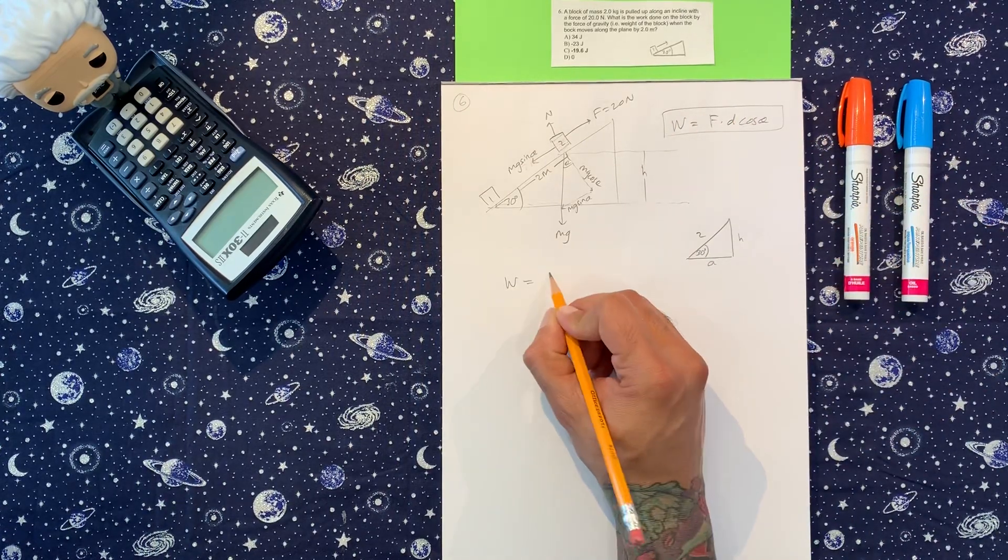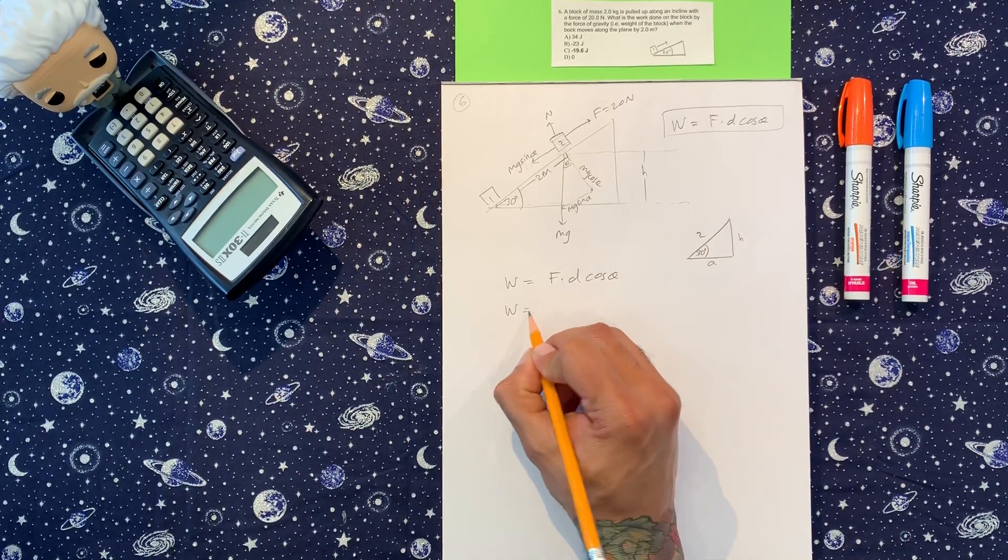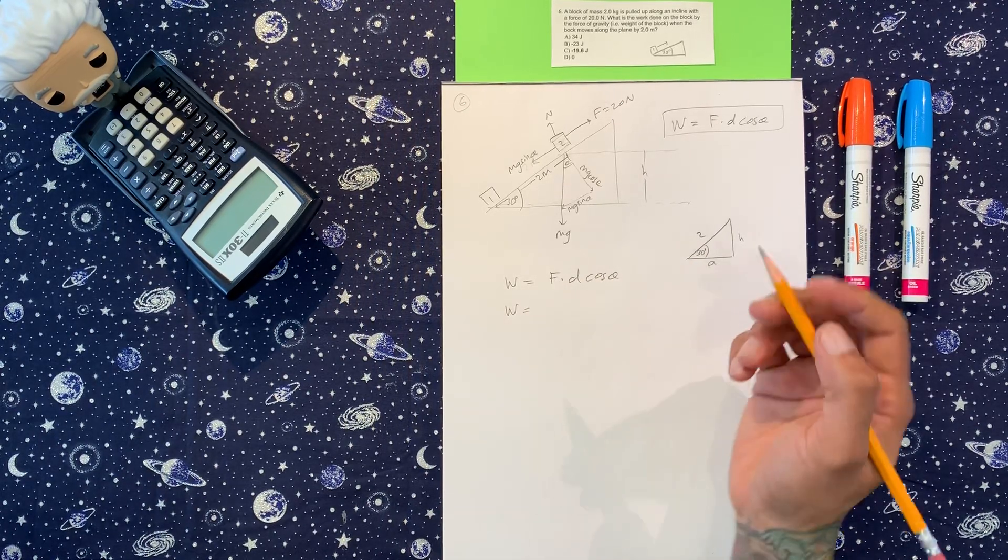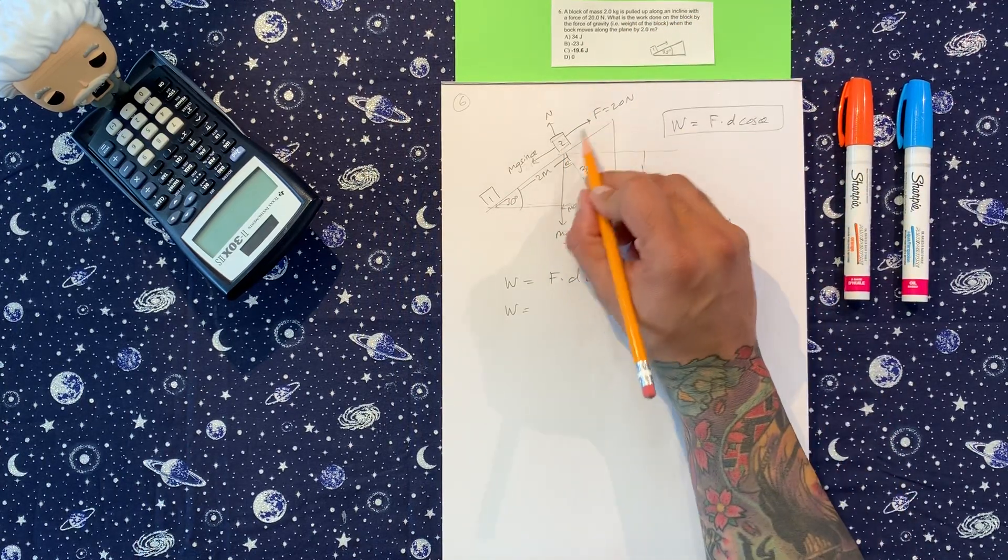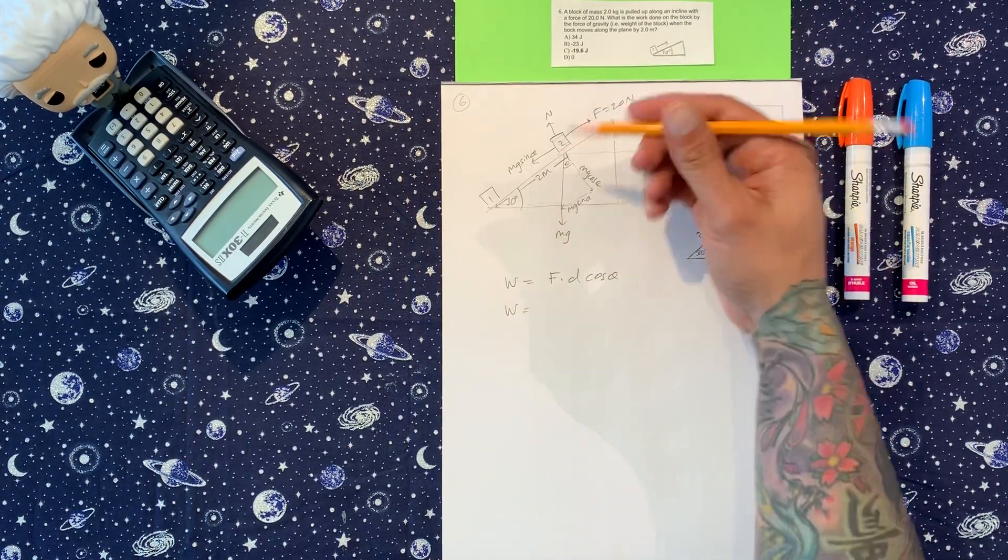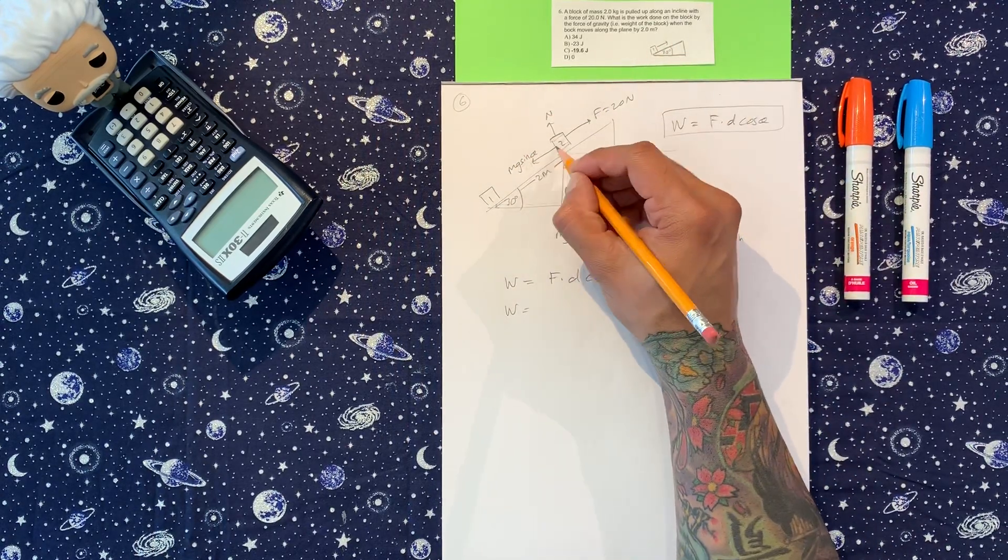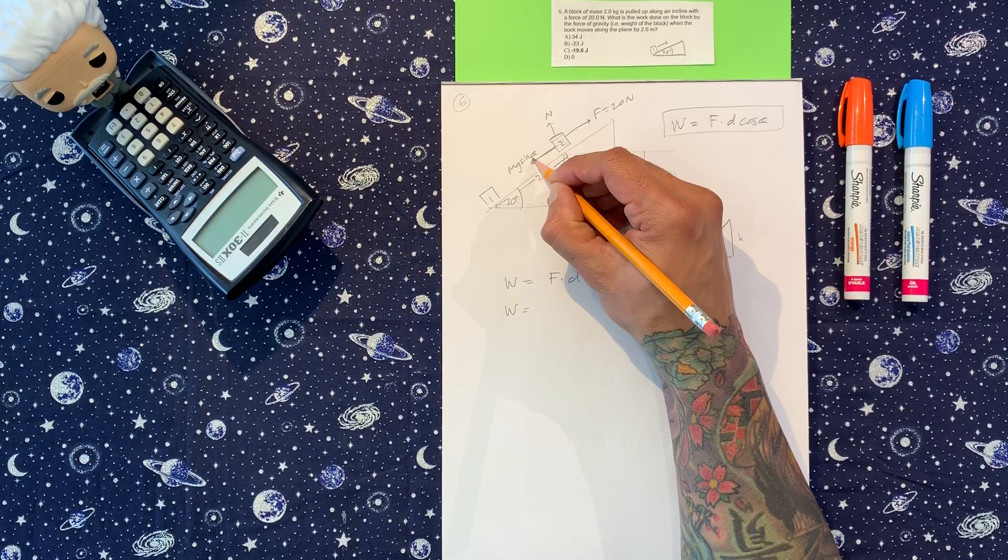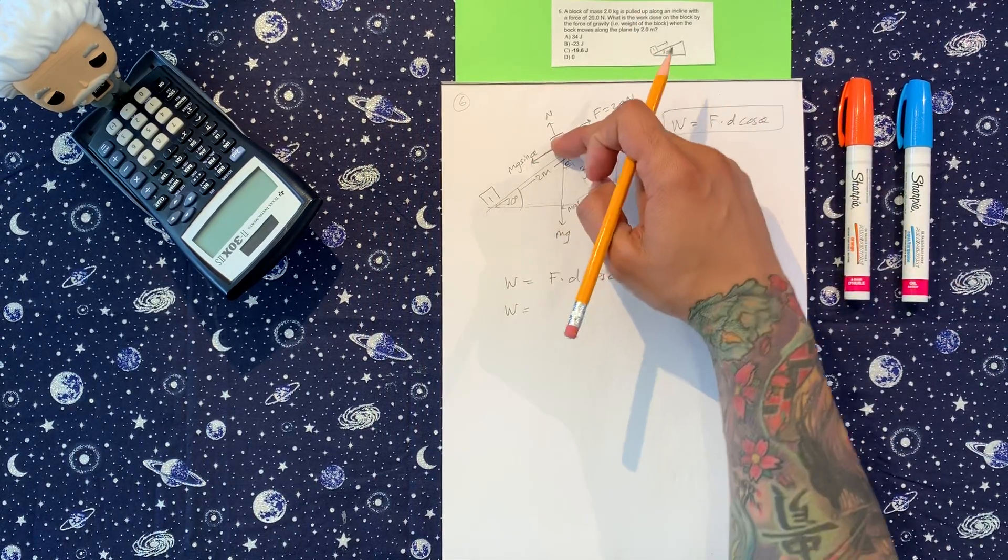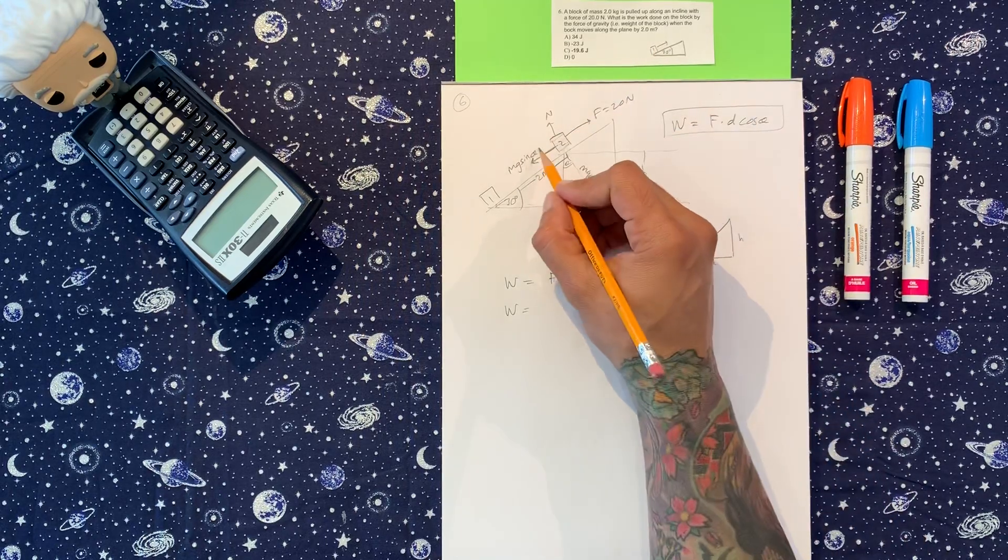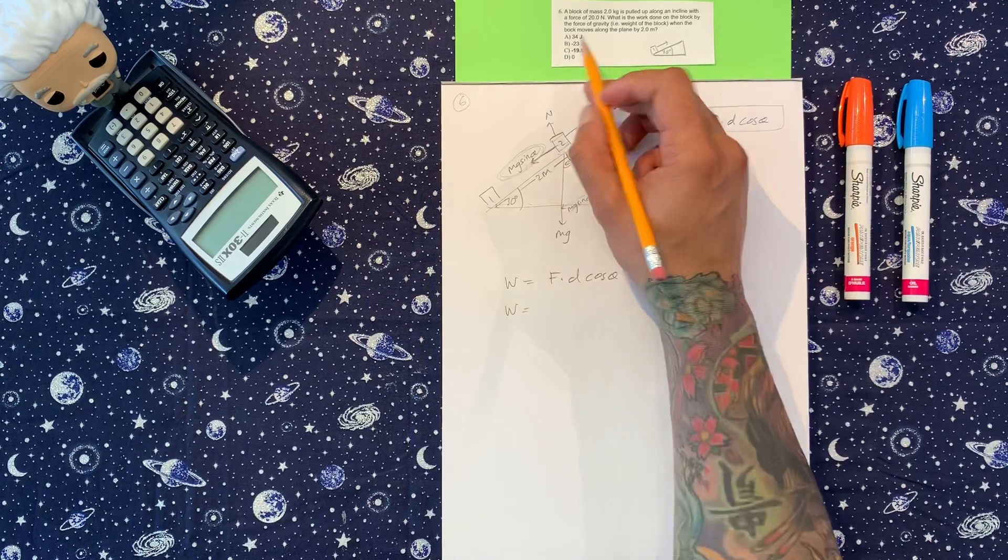So work is equal to force dotted with displacement, cosine theta. So now, the force of gravity is which one? The block, right, is trying to move up with this force, and something is opposing it. Since they say there's no friction, right, the only thing opposing it is this force right here, which is due to gravity, right? Gravity is pushing down, but since it's on a wedge, it's pushing this way.